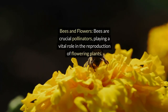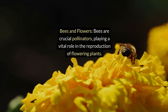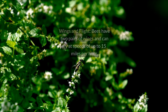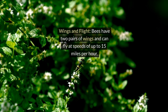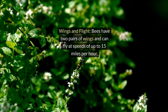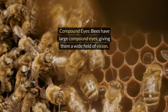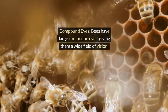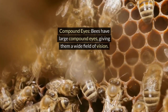Bees are crucial pollinators, playing a vital role in the reproduction of flowering plants. Bees have two pairs of wings and can fly at speeds of up to 15 miles per hour. They also have large compound eyes, giving them a wide field of vision.